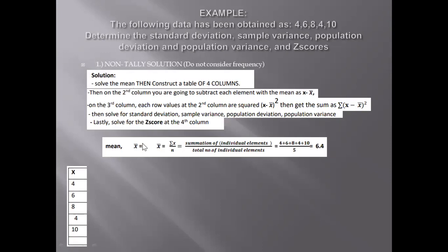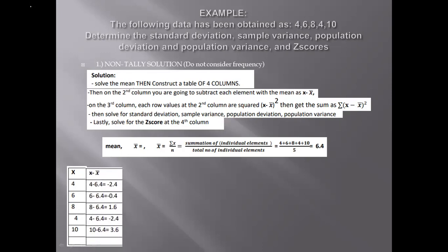Now, constructing the table: on the leftmost column, enlist your individual elements under x — we have 4, 6, 8, 4, and 10. For the second column, determine the individual element minus the mean. So 4 minus 6.4 gives us negative 2.4. Then 6 minus 6.4 gives us negative 0.4. And 8 minus 6.4 gives us 1.6, and so on.